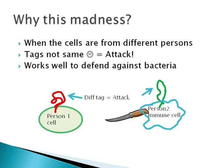Now that we have a simplified understanding of the immune system, let me explain the method to this madness. In a transplant, many cells from one person interact with the immune cells belonging to another person. Obviously, the ID tags are different. In this example, you can see that person 1 has a squiggly shaped tag and person 2 has a straight tag. The immune system has no difficulty in finding the alien cells and killing them. This is nature's elegant technique to defend against bacteria and other microorganisms, which display different kinds of tags on their cell surface, making it easy for our immune system to kill them.